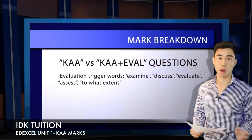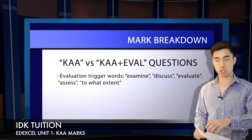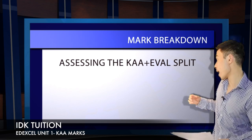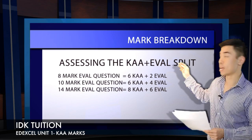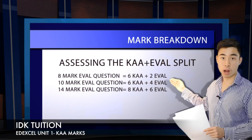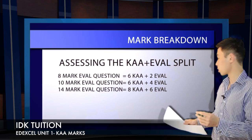The next step in assessing the allocation of marks on offer for any given question is figuring out how many marks are available for the evaluation component as opposed to the KAA component. Even within the evaluation question, there are still KAA marks on offer. The allocation of KAA marks depends on the total marks — it's always going to be less than 50%. For an eight-mark evaluation question, you have six KAA marks and two evaluation marks.